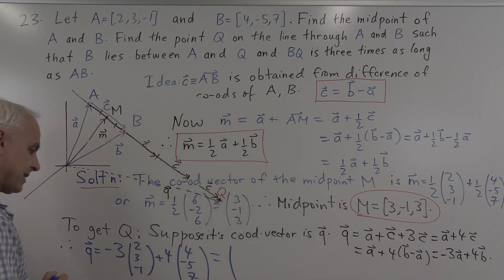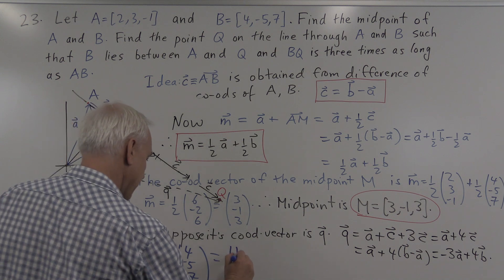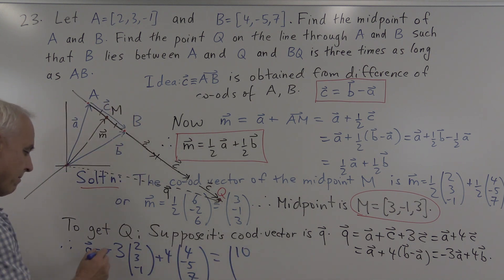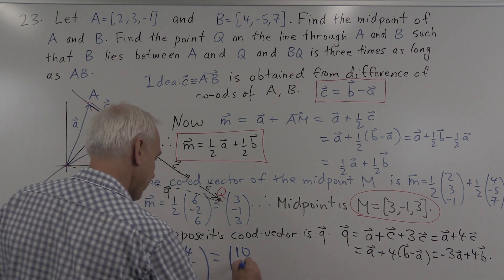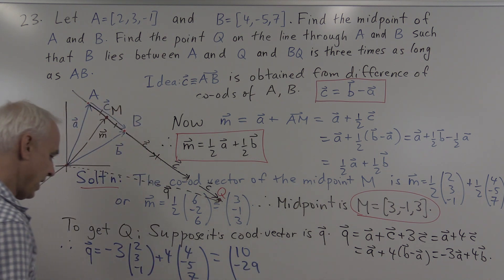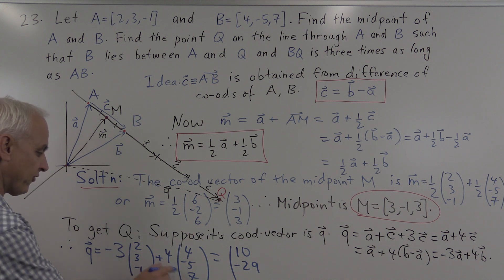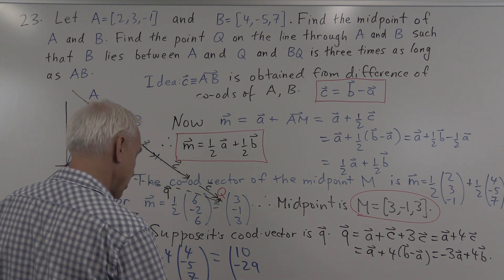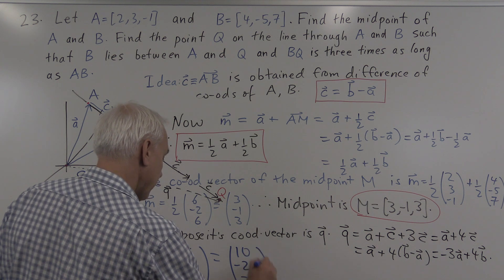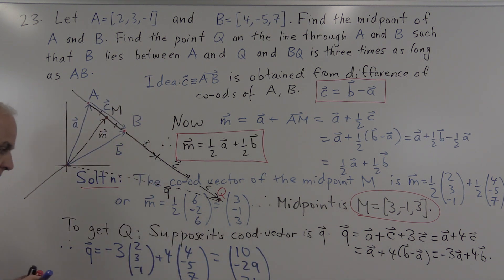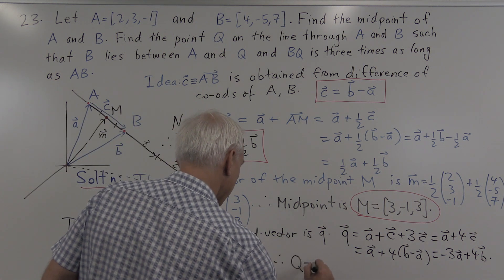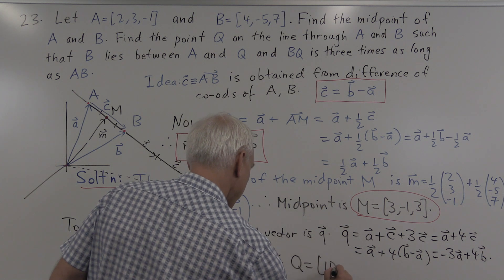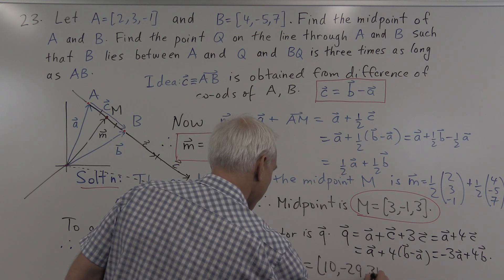What do we get? Minus 6 plus 16 is 10. Minus 9 minus 20 is minus 29. And 3 plus 28 is 31. Therefore the actual point Q is equal to (10, −29, 31).